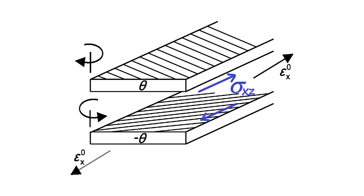Since interlaminar stresses cannot be calculated by lamination theory or by using shell elements, we use 3D solid modeling to calculate the interlaminar stress sigma-1-3 in the 45 and minus 45 laminas, next to their interface, at the edge of the specimen.